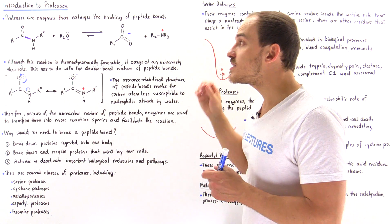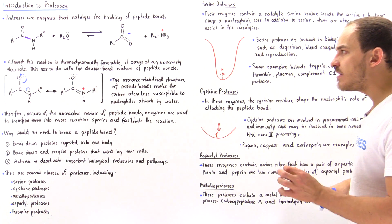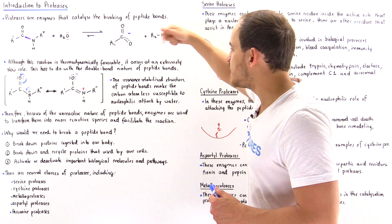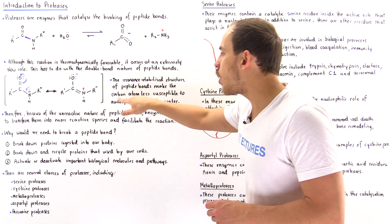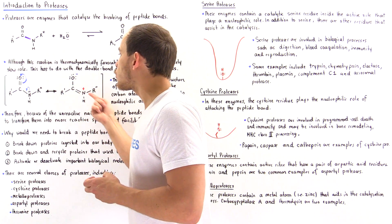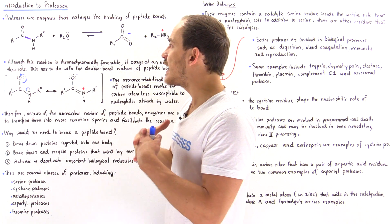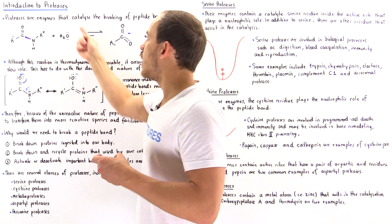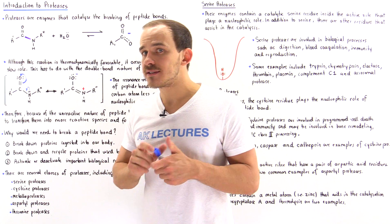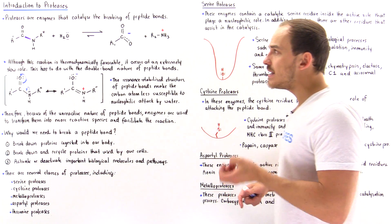Even though the products are more stable and lower in energy than the reactants, this reaction occurs at an extremely slow rate due to the double bond character of peptide bonds. The resonance-stabilized structure makes the carbon less susceptible to nucleophilic attack by water, electrostatically repelling the electrons of water. Therefore, in order to quickly and effectively break these peptide bonds inside our body, we must use these enzymes — these proteases.